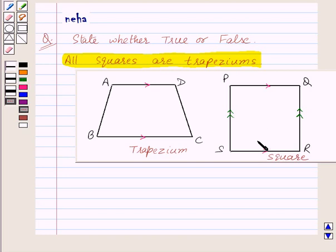So we can say that a square is a special trapezium with both the pairs of opposite sides parallel. Thus the statement all squares are trapeziums is true.